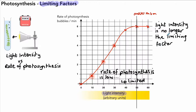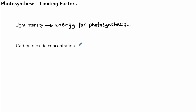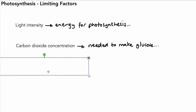Light is not the only limiting factor. There are other factors that can limit the rate of photosynthesis. Light intensity is one — the energy for photosynthesis comes from light energy. The second limiting factor is carbon dioxide concentration. We need carbon dioxide, as shown by the photosynthesis equation, to combine with water to make glucose, which is the food for the plant.